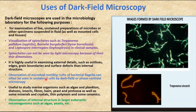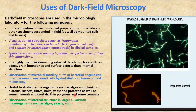For observation of microbial motility, flagella and tufts of bacterial flagella can often be seen in unstained cells using the dark field or phase contrast microscope. The dark field microscope is also useful to study marine organisms such as algae, plankton, diatoms, insects, fibers, yeast, protozoa, as well as minerals, crystals, thin polymers, and ceramics. Internal structures in larger eukaryotic microorganisms like algae and yeast can also be observed.